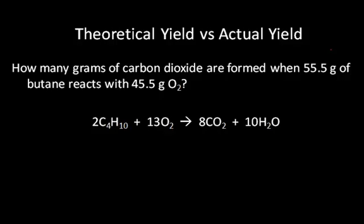The theoretical yield is the amount of product produced that you calculate from the stoichiometric relationships. The actual yield is the amount you actually make and you can measure in the lab after performing the experiment.